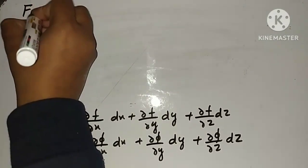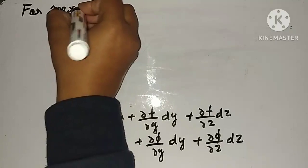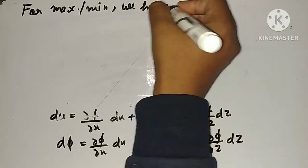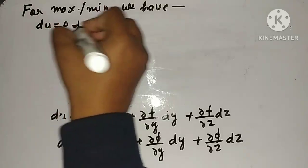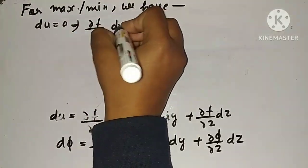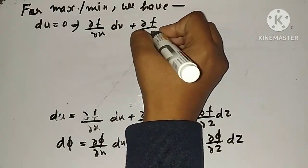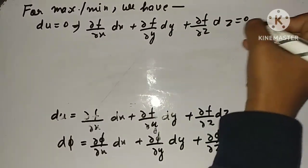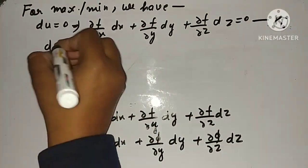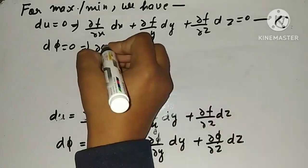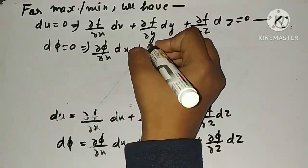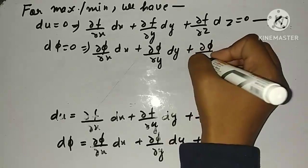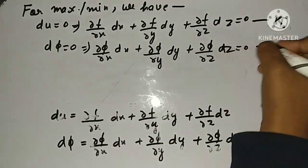For maxima or minima, we have du = 0, giving (∂f/∂x)dx + (∂f/∂y)dy + (∂f/∂z)dz = 0 — equation first. And dφ = 0 implies (∂φ/∂x)dx + (∂φ/∂y)dy + (∂φ/∂z)dz = 0 — equation second.